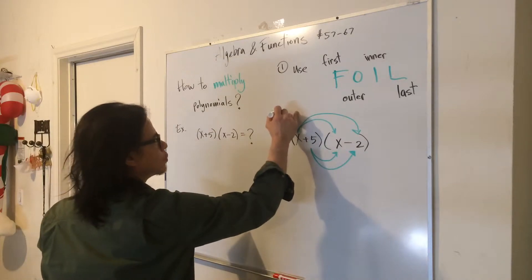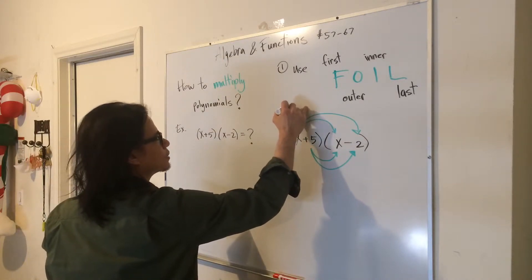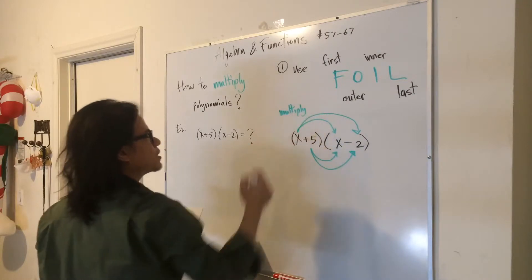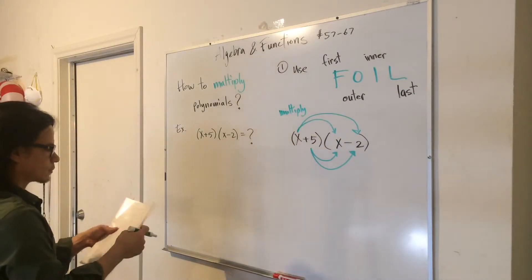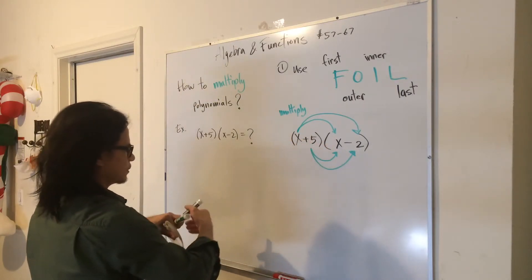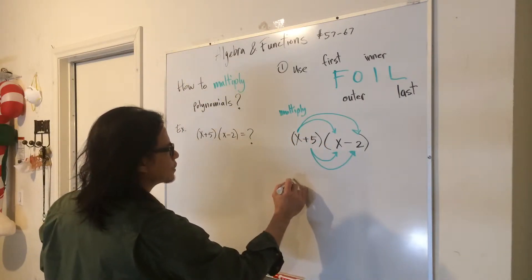Cool, right? So we're going to multiply those guys there to get the answer. So first term first, x times x gives us x squared.